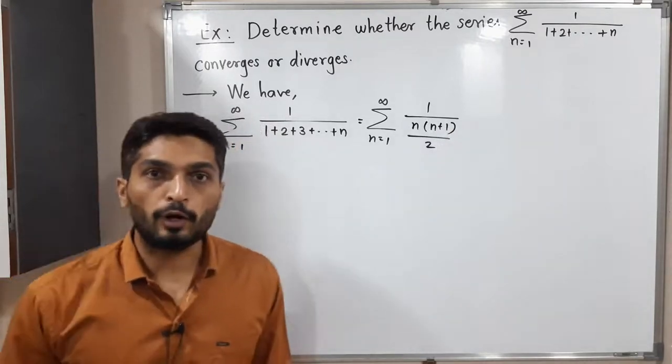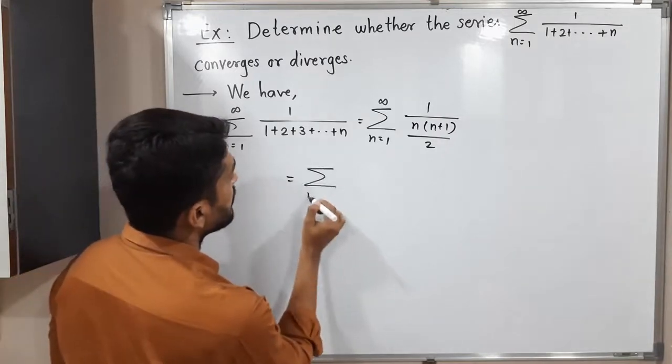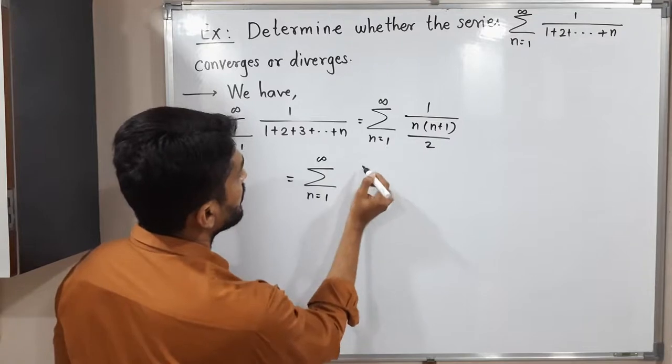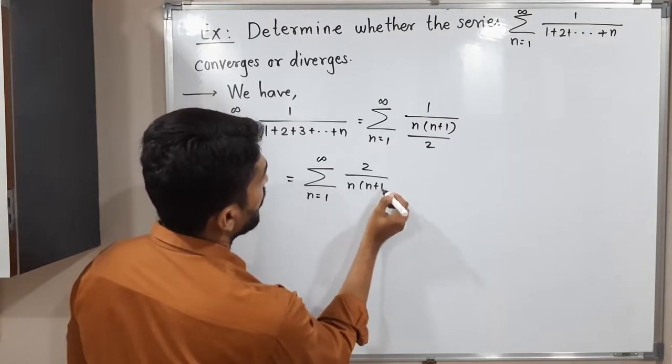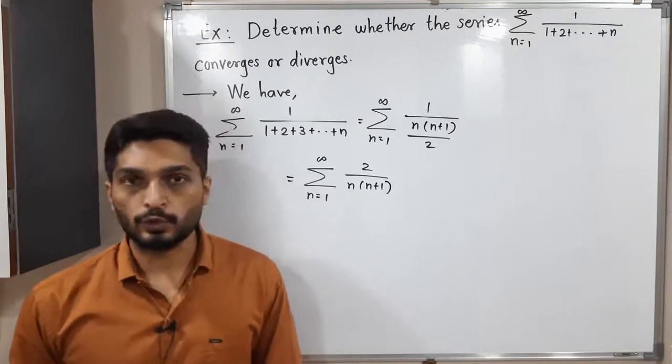That 2 is in denominator of denominator, it will go to the numerator. So this is equal to summation n running from 1 to infinity 2/(n(n+1)). This is the given series and we have to check whether it is convergent or not.